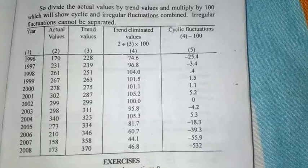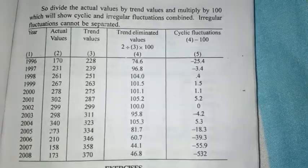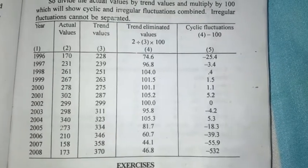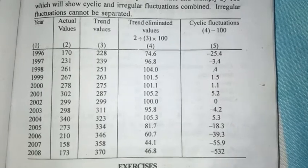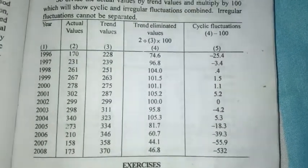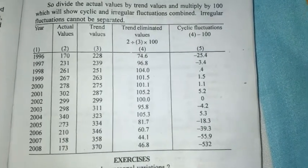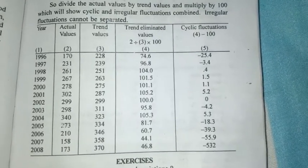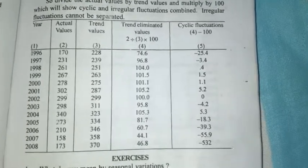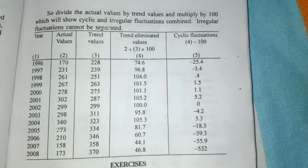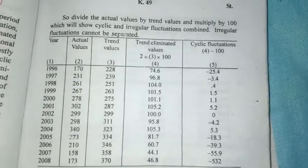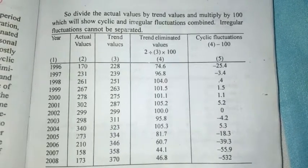Now we look at the cyclic values. The trend-eliminated value represents the combined cyclic and irregular fluctuations. The trend value base is 100, and we use this to examine the cyclic fluctuations from the data.